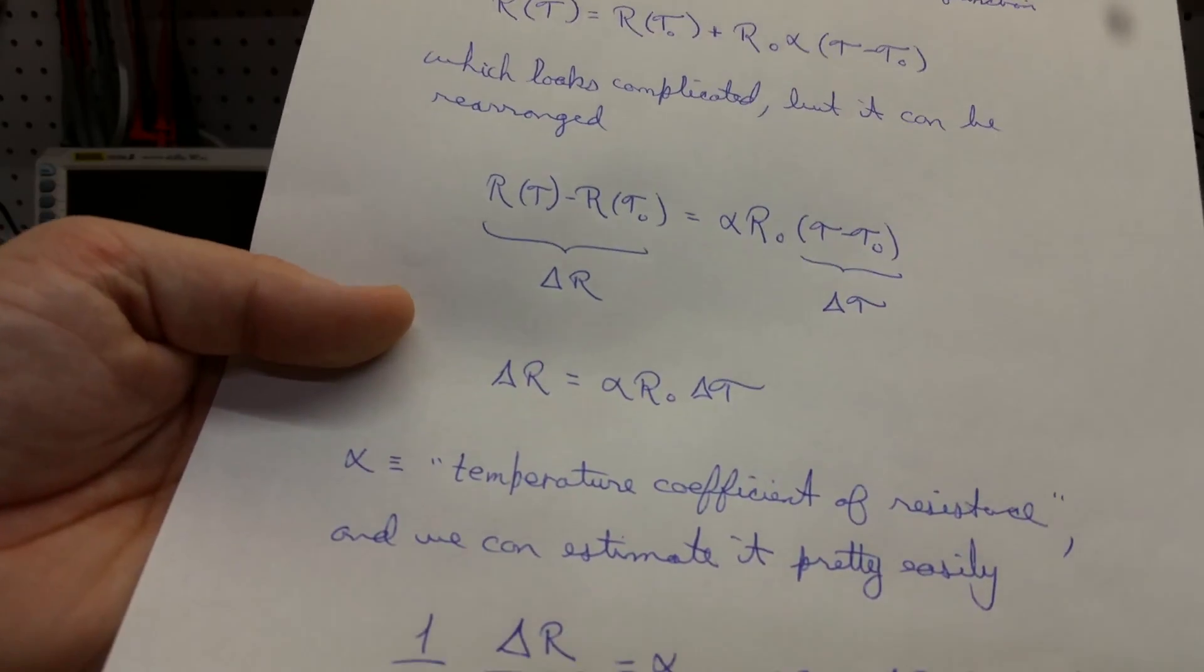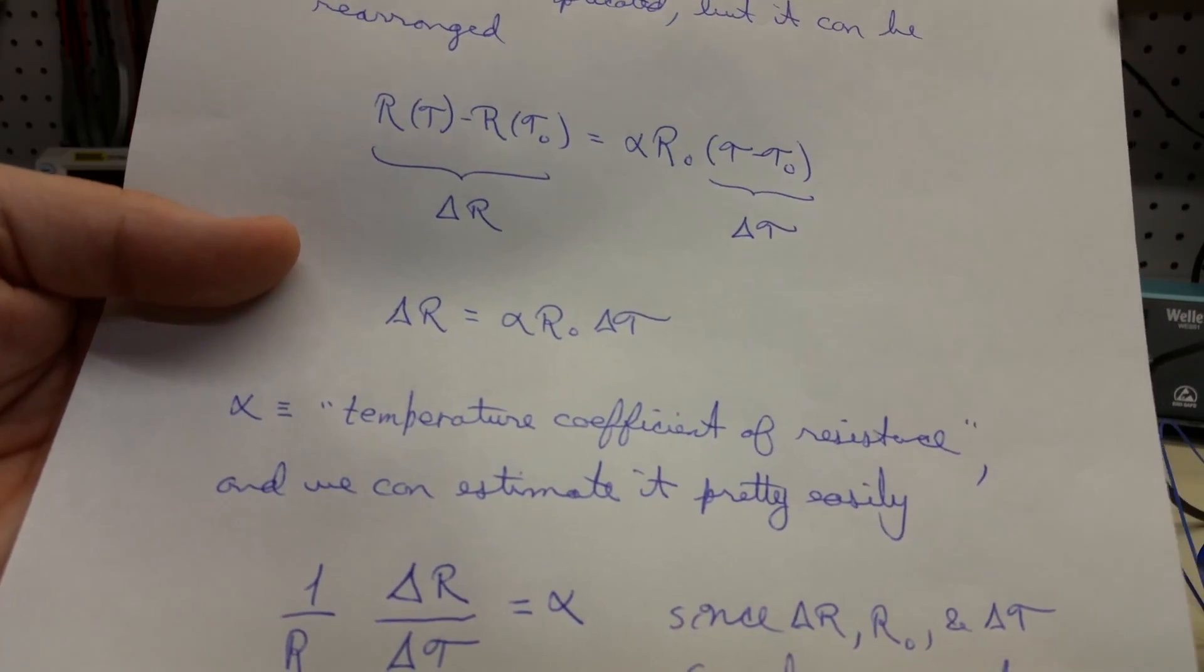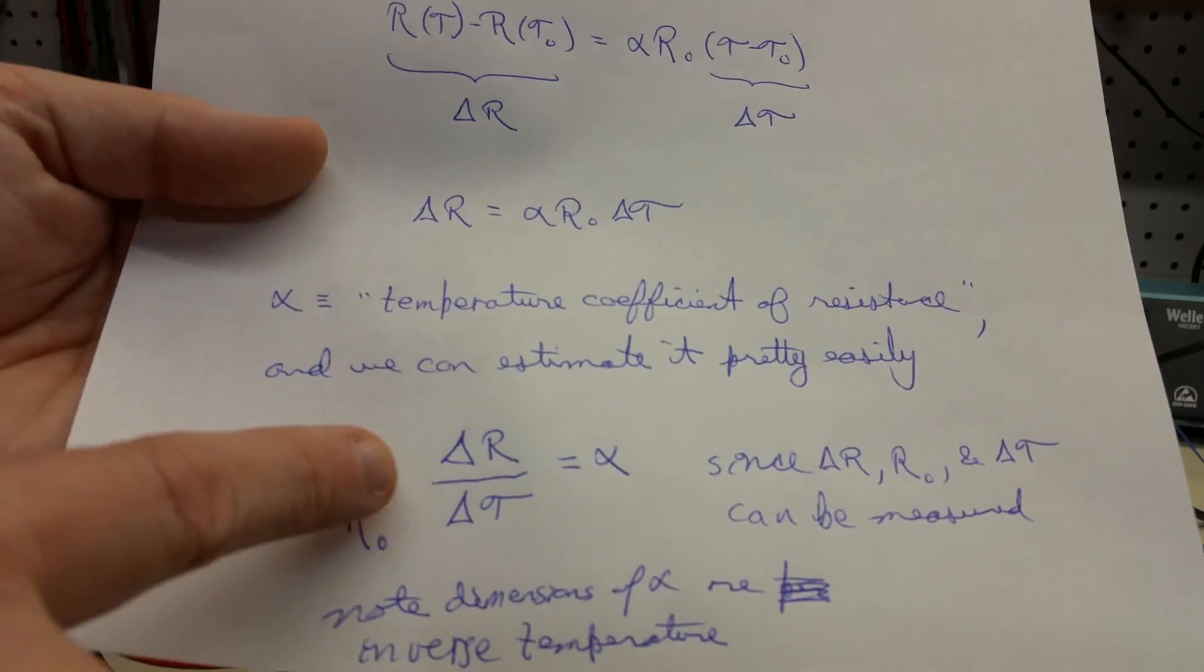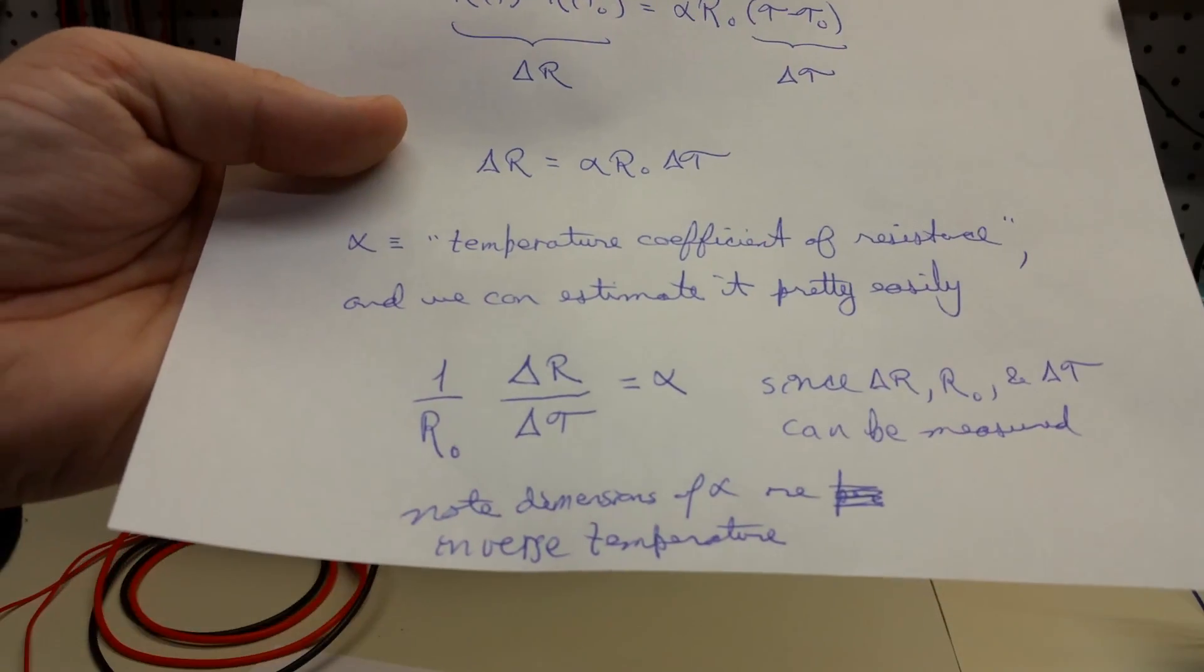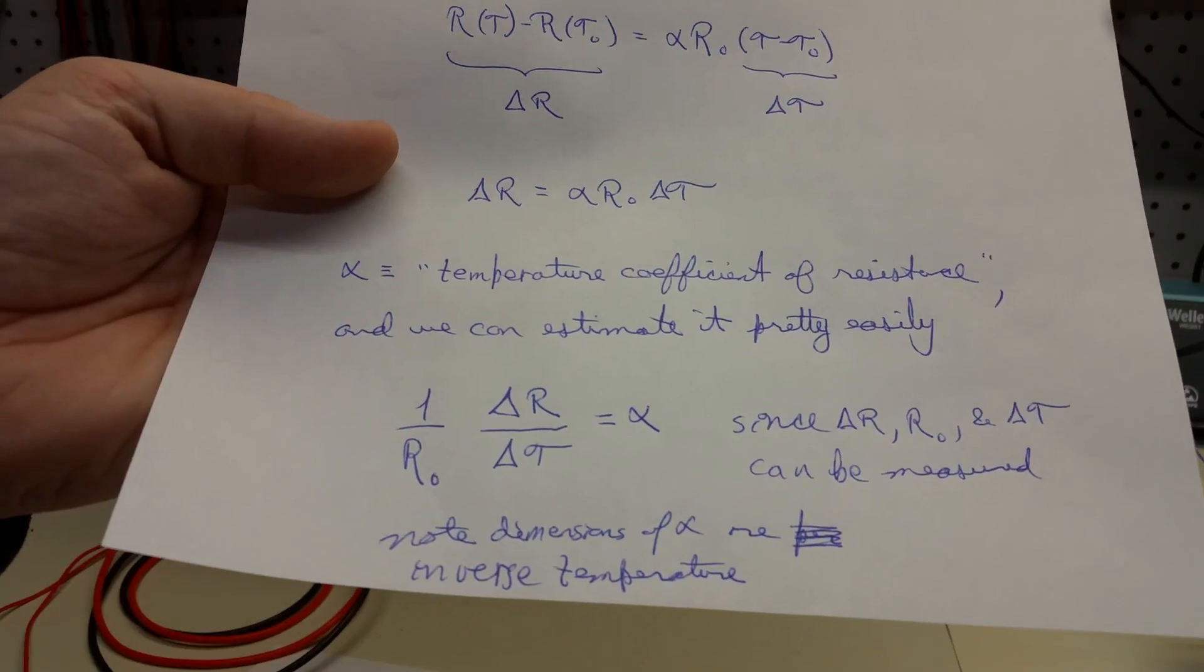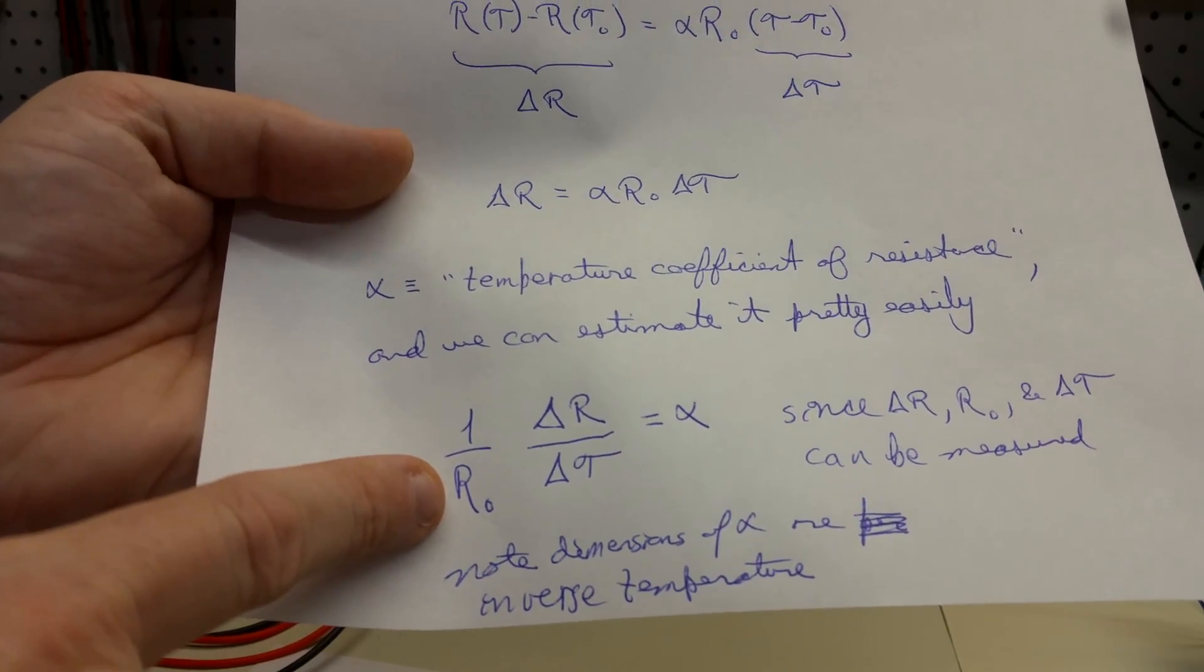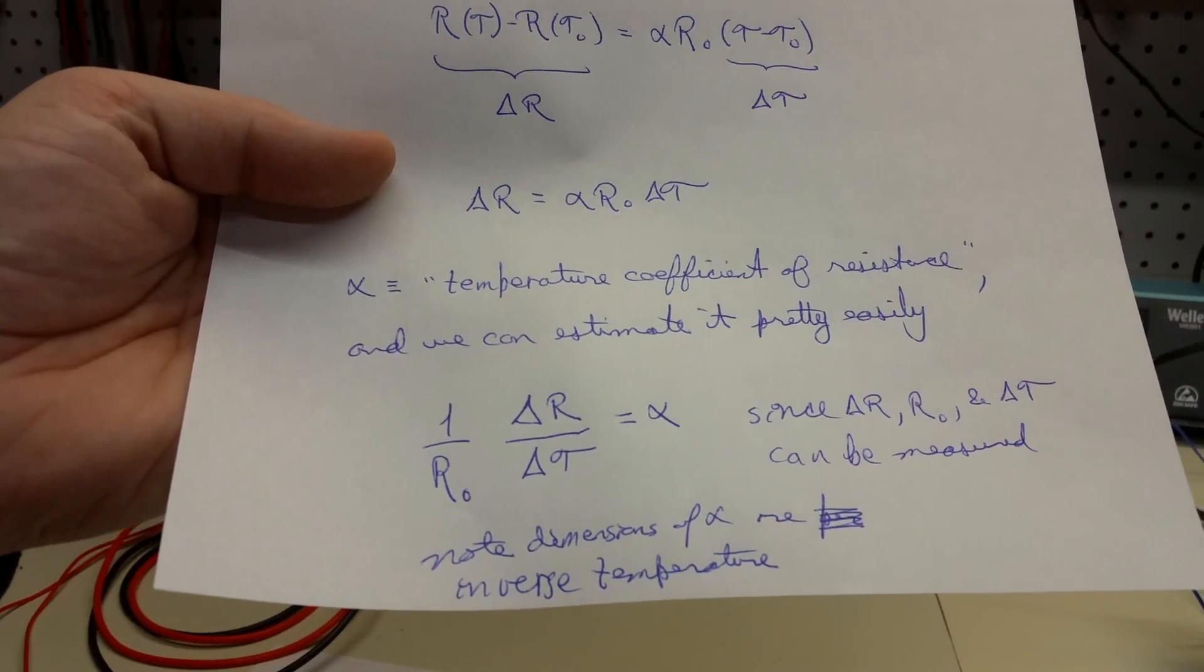And so the thing about this very simple formula is that it allows us to estimate, based on some pretty simple measurements, what this alpha is. So we can just rewrite this as one over R sub zero, times delta R over delta T, and that will give us an estimate of this alpha. So notice that the dimensions of alpha are going to be inverse temperature, because the difference in resistance is ohms, and one over resistance is one over ohms, so the ohms will cancel out. And we're just left with one over temperature.